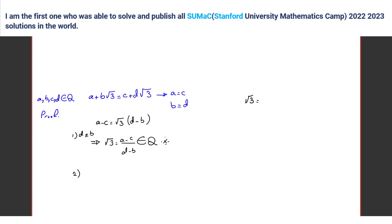The proof that root three is not rational is not hard. If root three equals x over y, where x and y are positive integers and relatively prime, then x squared equals 3y squared, so three divides x squared.